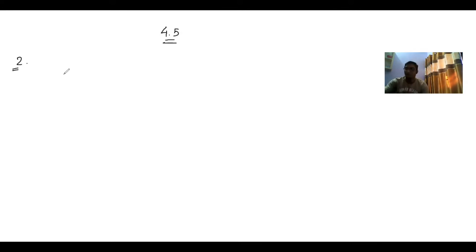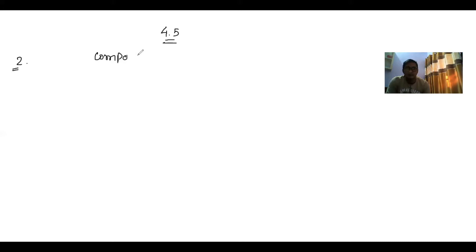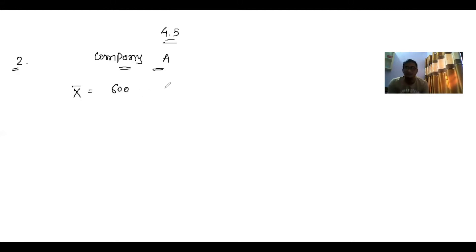Now from your textbook, in Exercise 4.5 today I am going to start Question number 2, where the daily salary of administrative staff of two companies yields the following results. For Company A: mean salary x̄ is 600, and standard deviation s is 30.